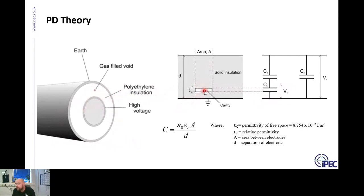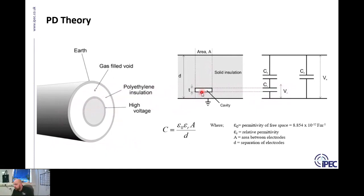As the energy in the power cycle increases, this small cavity or defect area doesn't have the ability to resist that stress, and you get a very small partial discharge occurring at this defect point. So the partial discharge is occurring at the actual cavity — not across the whole insulation — it's a very localized discharge at a localized stress point.